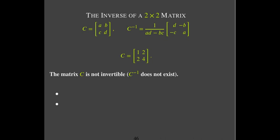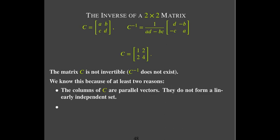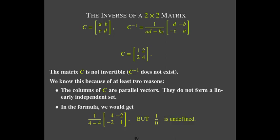Matrix C is not invertible — C-inverse does not exist. We can see this for at least two reasons: the columns are parallel to each other (the second column is two times the first), so they do not form a linearly independent set. This means the reduced row echelon form has a free variable, so the corresponding linear transformation cannot be 1-to-1 and cannot be invertible. More simply, calculating AD minus BC gives 4 minus 4, which equals zero, and one over zero is undefined.